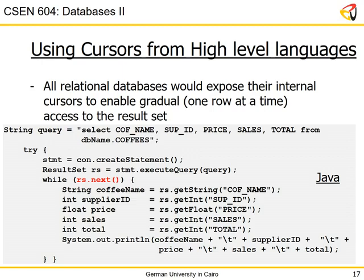Iterators are heavily used and exposed in all high-level languages — Java, C#, Python — where you call .next() and get one row at a time. This is how database engines manage resources internally to avoid working with whole tables in one shot.